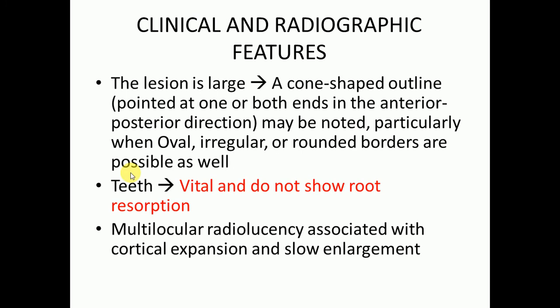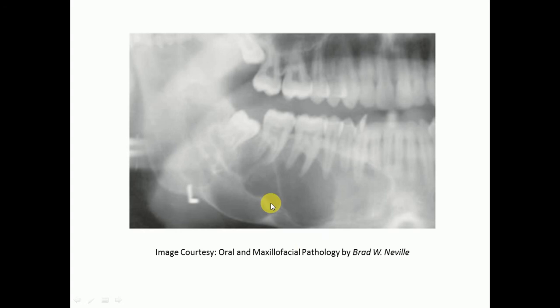The lesion can be multilocular. Multilocular radiolucency is associated with cortical expansion and slow enlargement. Here we can see multilocular radiolucency at the body and the angle area of the mandible.